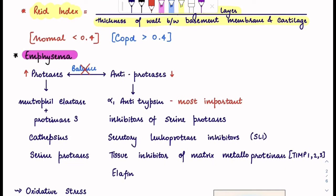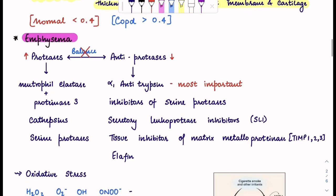We will talk about the second component, that is emphysema. In emphysema, usually in our body there is a balance between anti-proteases and proteases, but in emphysema this balance is lost. Normally, the proteases are neutrophil elastase, protease-3, cathepsins, and serine proteases. The anti-proteases are alpha-1 antitrypsin, inhibitors of serine proteases, secretory leukoprotease inhibitors, tissue inhibitor of matrix metalloprotease, and elastin.